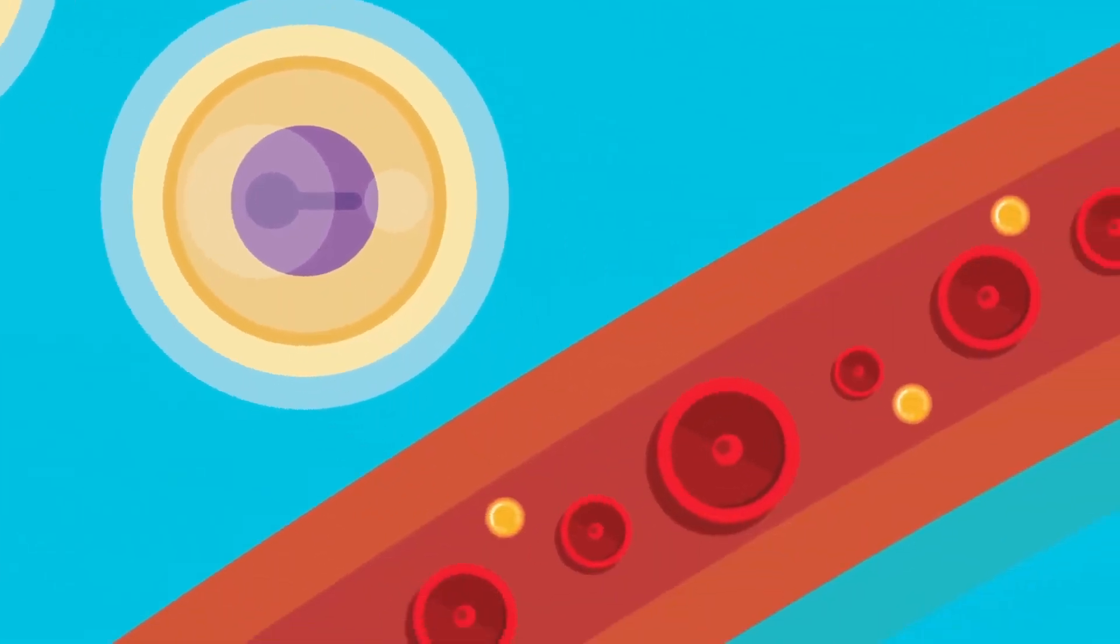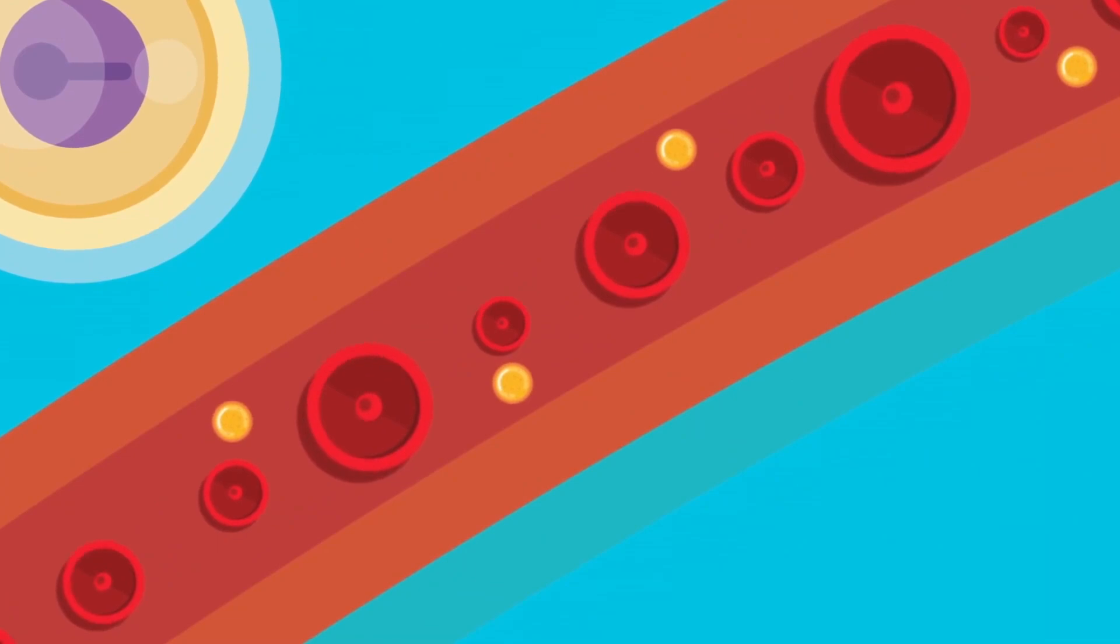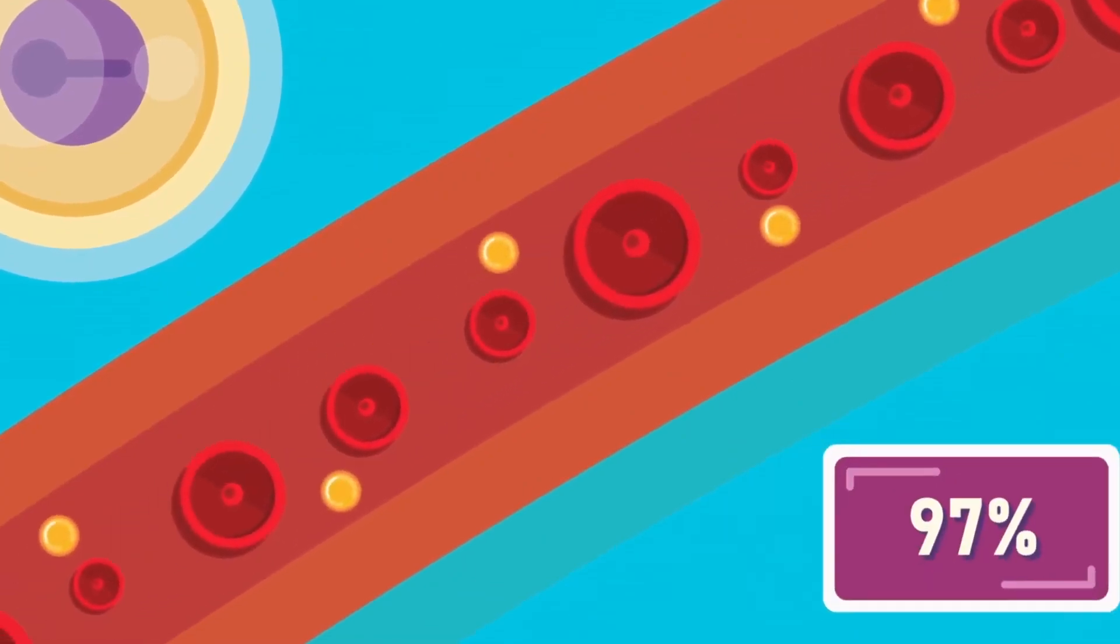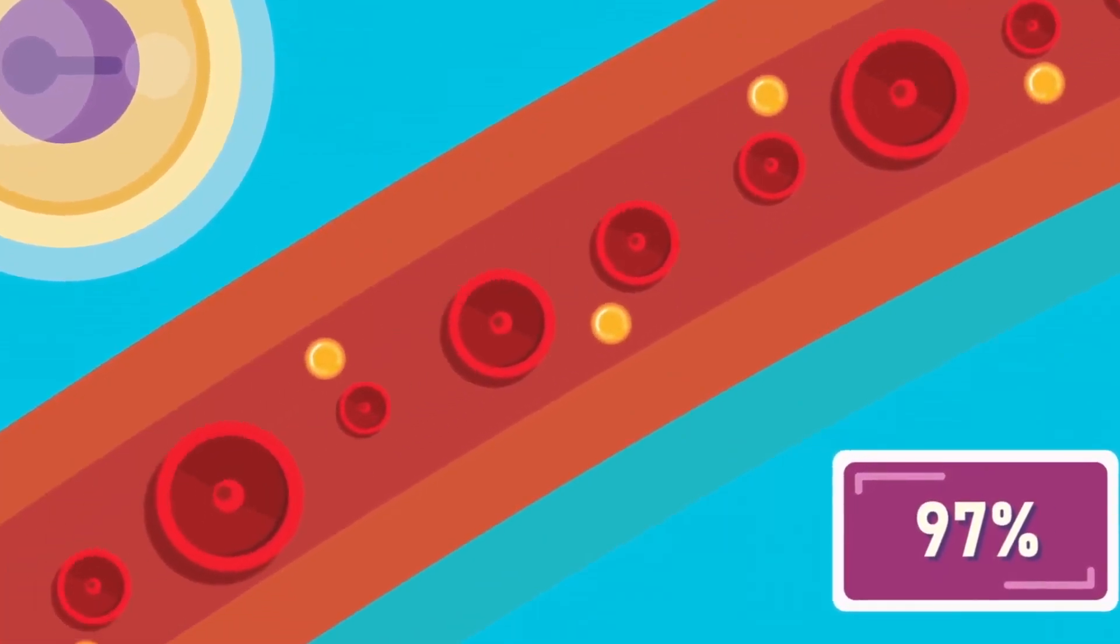A proportion of extracellular fluid is blood plasma. Together, plasma and interstitial fluid make up at least 97% of the ECF.